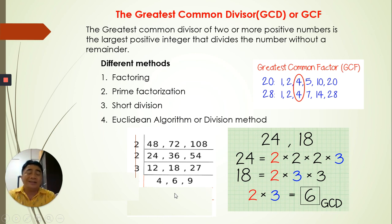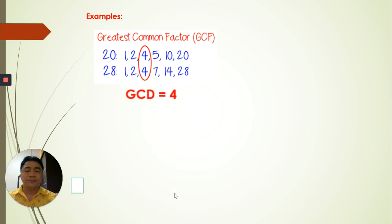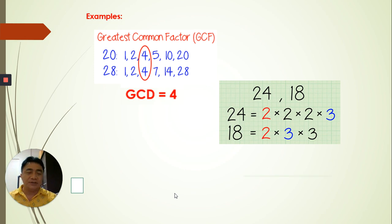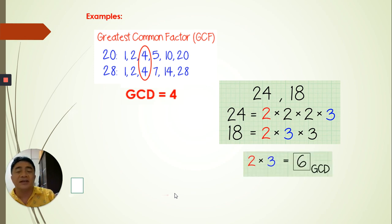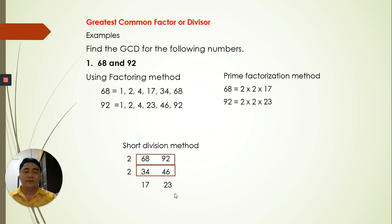For the Euclidean algorithm, we'll do that later because it's a longer, more complex method. So we'll focus on the first three methods for now. To summarize: from the factoring method we got 4, from prime factorization we got 6, and from short division we got 12.